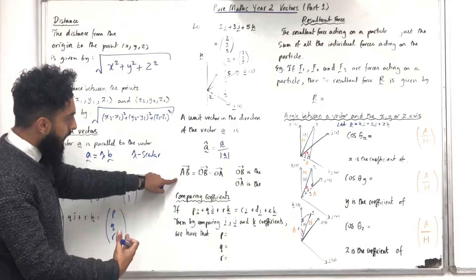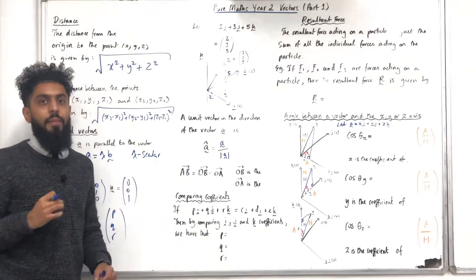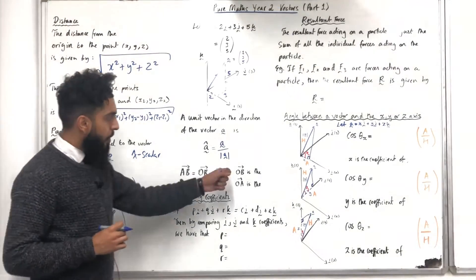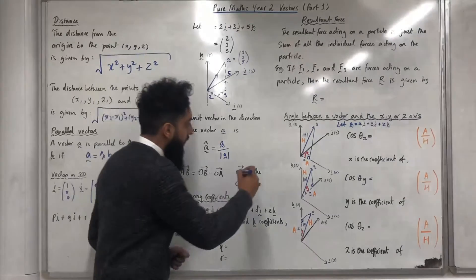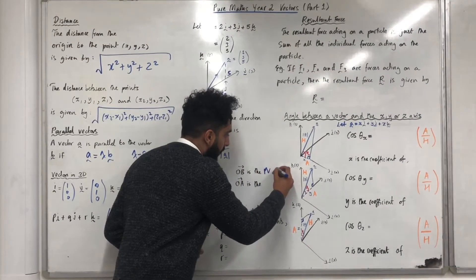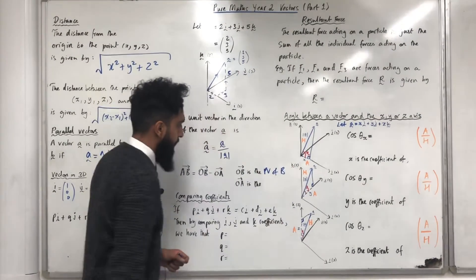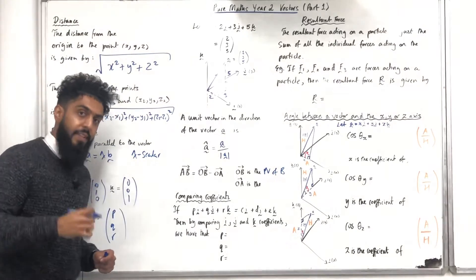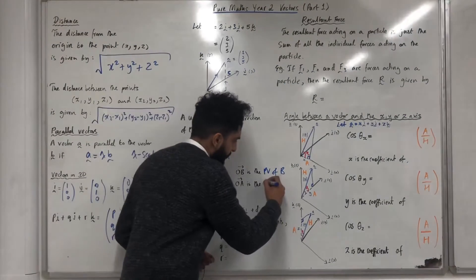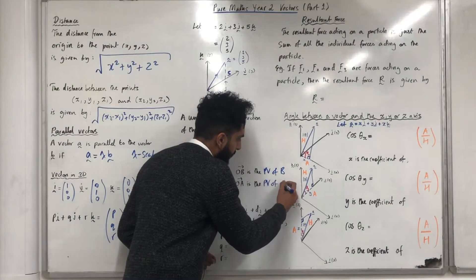The vector a to b is equal to o to b minus o to a, where o to b is the position vector of the point b, and o to a is the position vector of the point a.